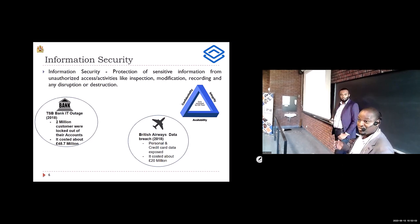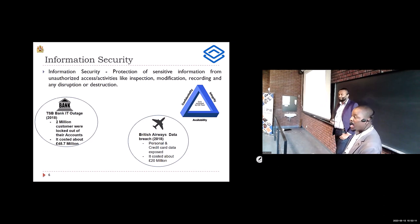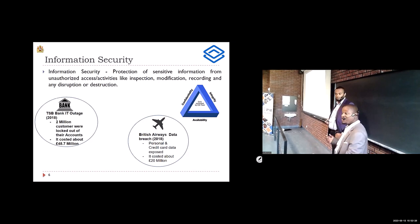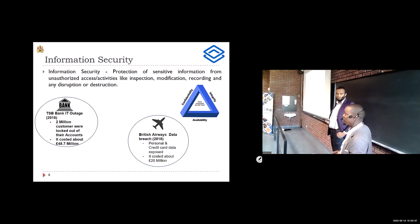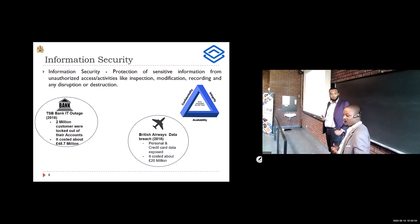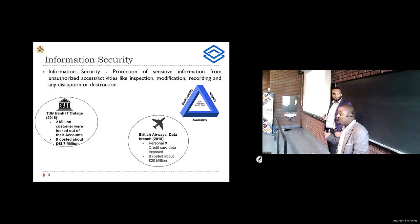To strengthen information security, there are several things we must do — ranging from political will and legislation. For example, in the US there's HIPAA, and in the EU there's GDPR which regulates how individual information can be shared. We need to put in measures to strengthen our systems. I'll call upon my colleague Brett to highlight what measures we're putting in place in Malawi to strengthen our DHIS2 implementation.